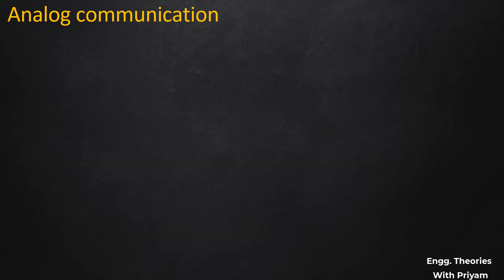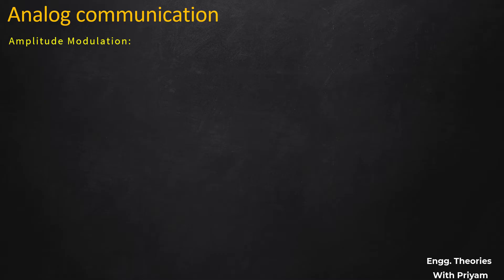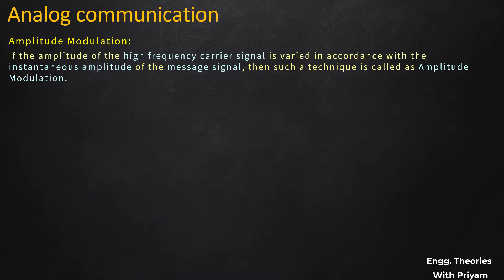In this lecture we will understand what is amplitude modulation and its mathematical analysis. Modulation is the process where the characteristics of the carrier signal are varied in accordance to the message signal. The characteristics include phase, amplitude, and frequency. In amplitude modulation, the amplitude of the high frequency carrier signal is varied in accordance with the instantaneous amplitude of the modulating or message signal.